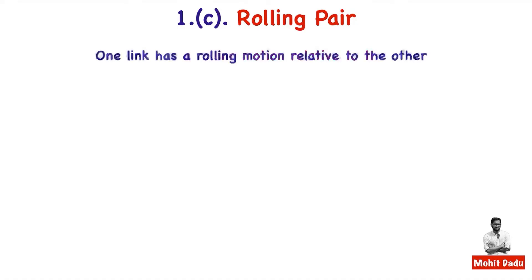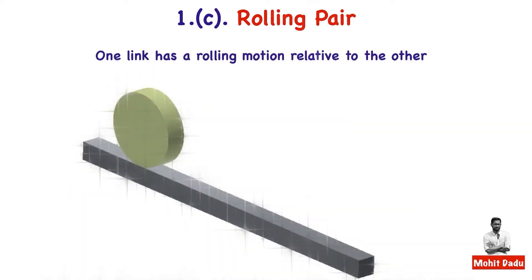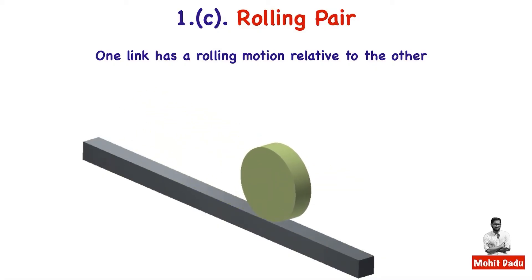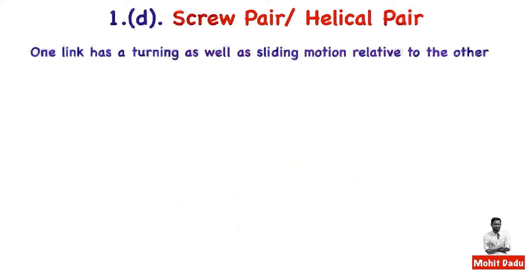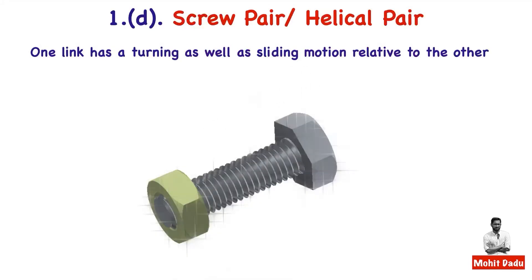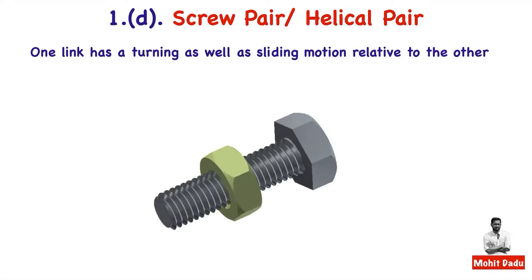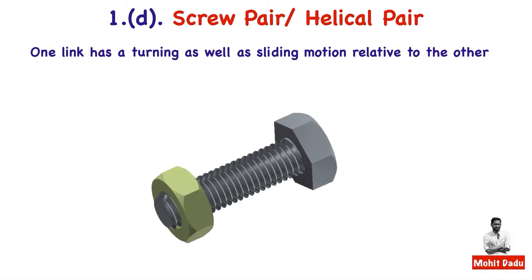The third classification is the rolling pair, where one link rolls with respect to the other. A disc rolls over a flat surface — the relative motion is rolling, which is a combination of rotation and translation. Next is the screw pair, where one link makes both turning and sliding motion relative to the other.